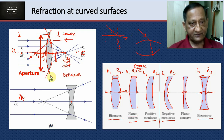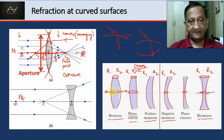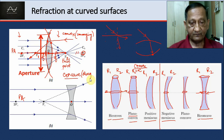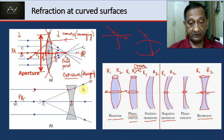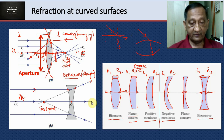That is what happens in the case of a convex lens — it is a converging type of lens. For a concave lens, it is a diverging type. A ray parallel to the principal axis undergoes two refractions and then diverges away, and all the divergent rays seem to be coming from one point — that is the focal point. There will be another focal point on the other side as well.